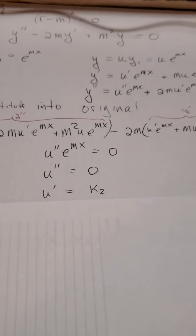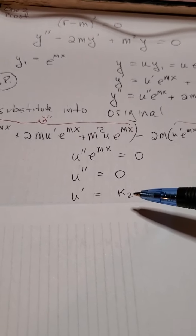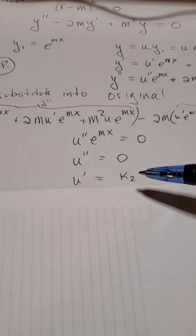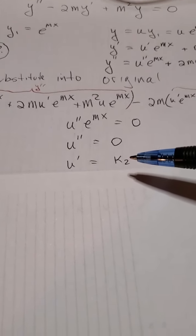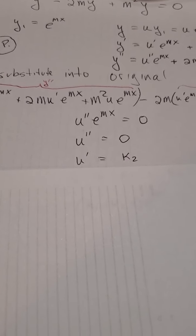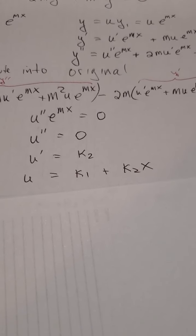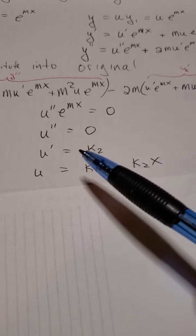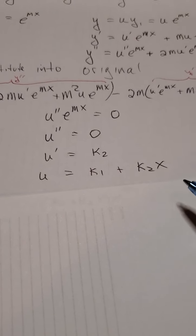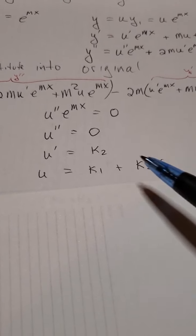Now what I do is I take the integral of both sides. So if u double prime equals zero, that means u prime equals some constant. I'm going to call it k2. Why am I calling it k2 and not k1? It doesn't matter, but the answer to me looks prettier when I do it this way. And now I integrate again and I get u is equal to k1 plus k2 x, because that's the integral of a constant: a constant times x plus a new constant.